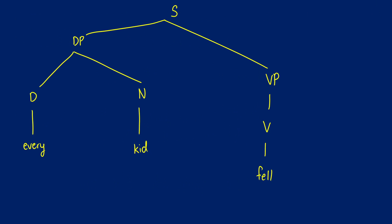Let's take a look at some types and fill in what we know in terms of meaning. Common nouns act as sets, so 'kid' would be something like lambda X dot X is a kid in function notation. 'Fell' would be lambda X dot X fell. These are going to propagate up the trees. We know these are type ET. We also know that the sentence should be a truth value. So what are we going to do for our DP?